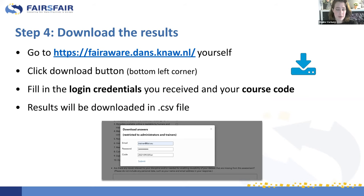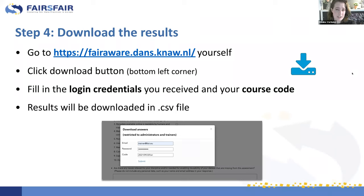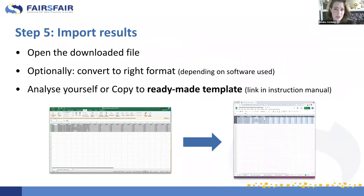After all your users have used the tool, the next step is to download the results. Navigate to the FAIRware website and click the download button in the bottom left corner, then fill out the login credentials you received from us and your personal course code — the results will be downloaded as a CSV file. The next step is to analyze your results, and this is where we made it quick and easy. You have the choice to analyze the results yourself however you like, or to use our ready-made template. The link is provided in the instruction manual and will also be posted in the chat.